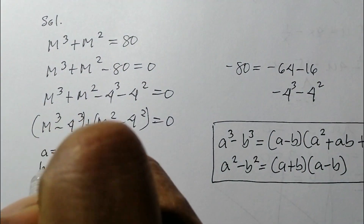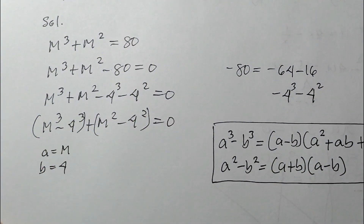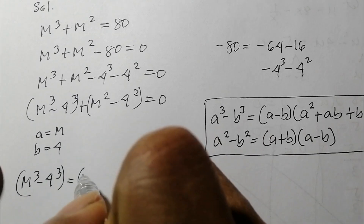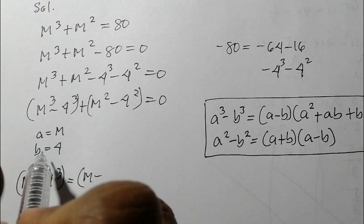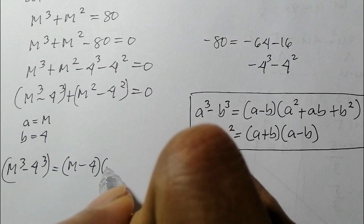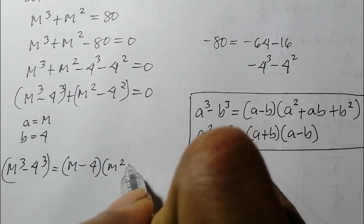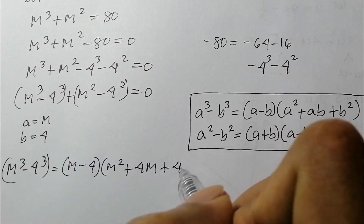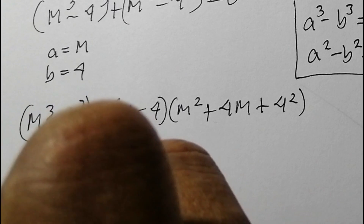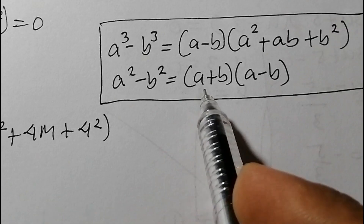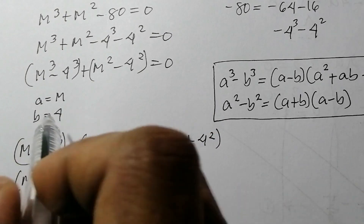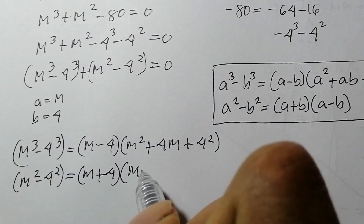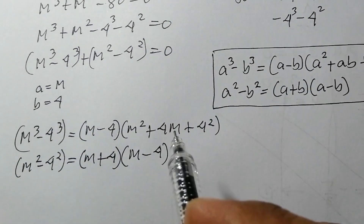Here, a equals m and b equals 4. So m³ minus 4³ equals (m minus 4)(m² plus 4m plus 4²). And m² minus 4² equals (m plus 4)(m minus 4).